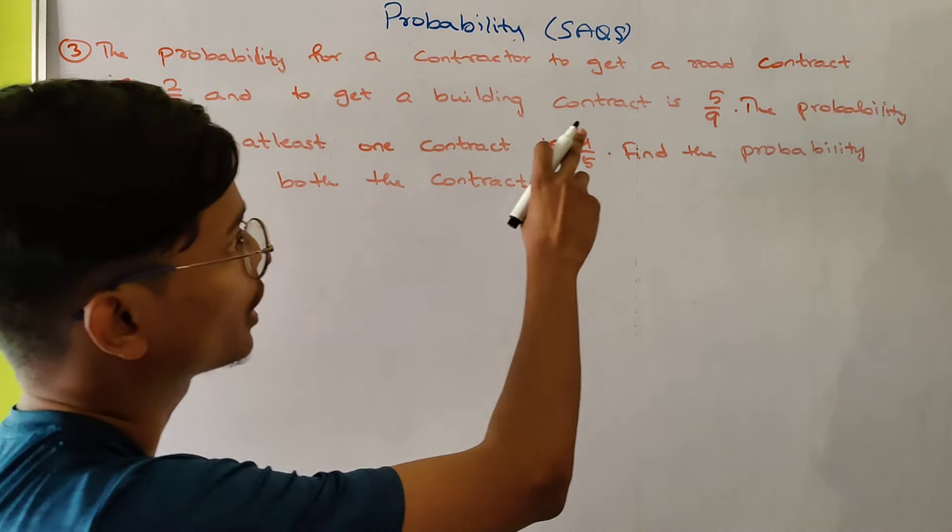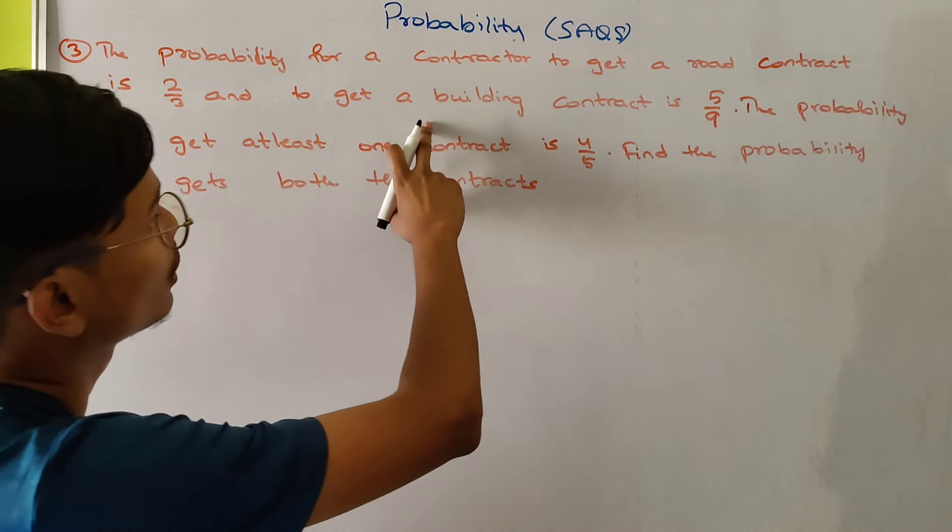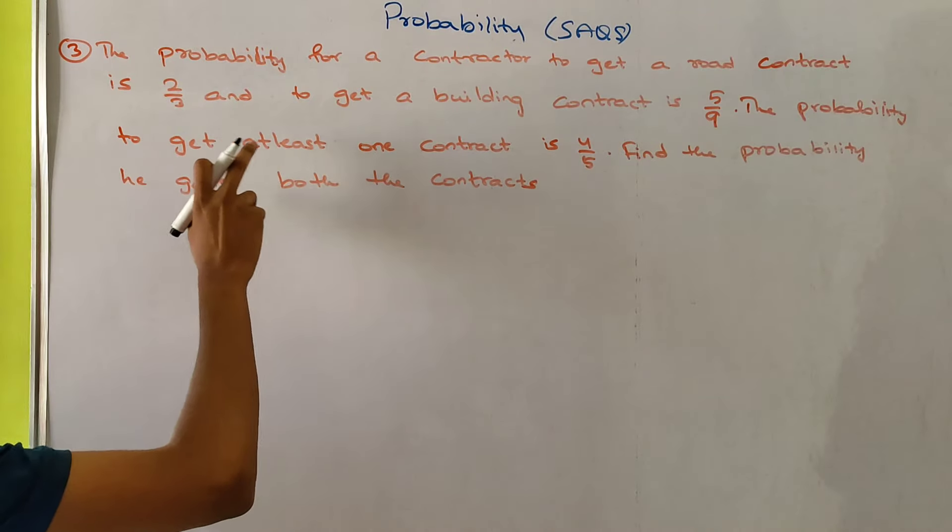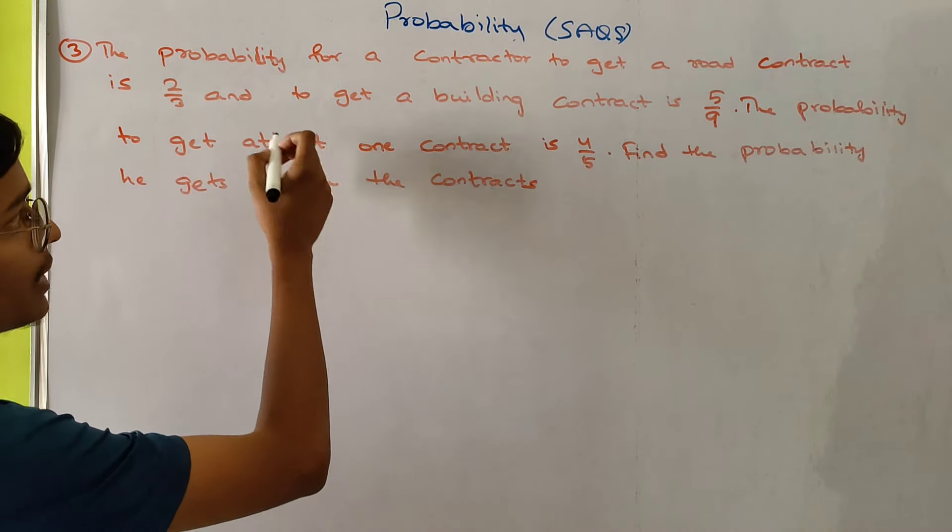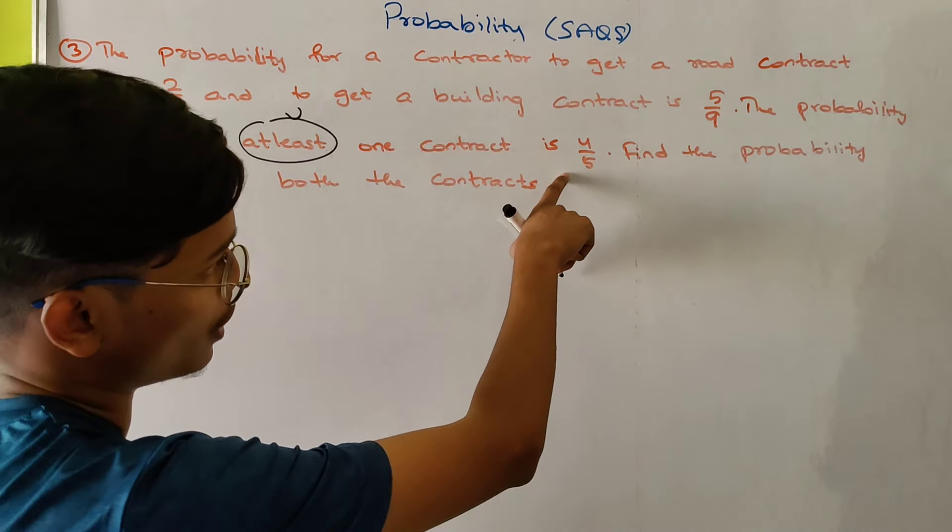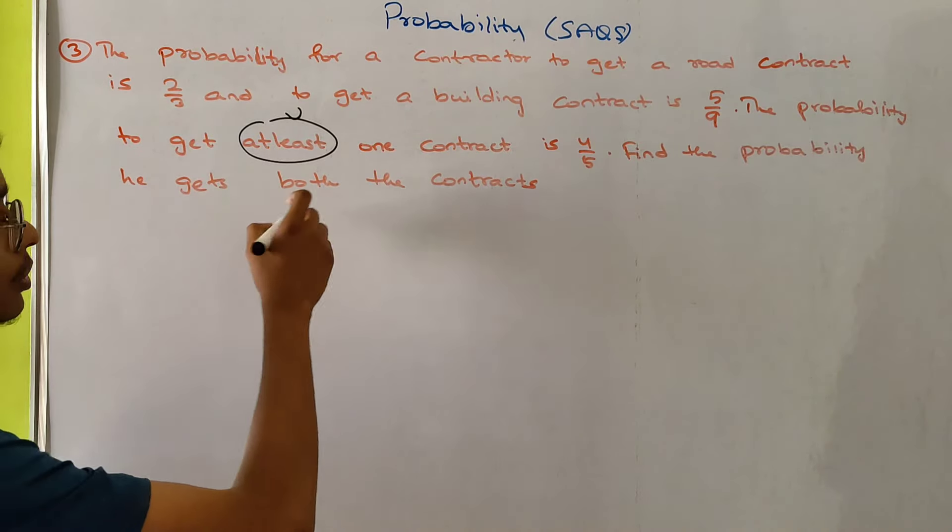The probability for a contractor to get a road contract is 2 by 3, to get a building contract is 5 by 9, the probability to get at least one contract is 4 by 5. Find the probability he gets both.